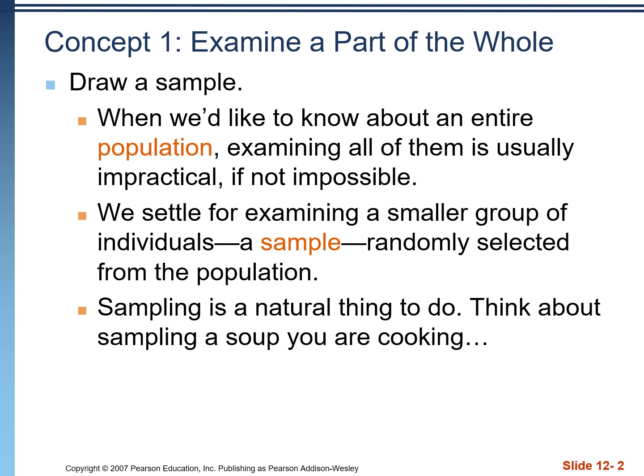Sampling is a natural thing to do. Think about someone making soup — it's not necessary to eat the entire pot to determine whether it tastes good. They can eat a bowl or even a spoonful, as long as the soup is sufficiently stirred up. Same idea with sampling: we want to randomize our sample. We could put all names in a hat and draw randomly, but more likely we'll use a random number generator or random number table like we did in chapter 11.